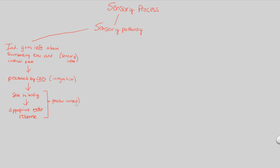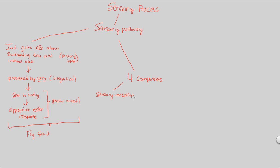This is a basic review of how a sensation occurs and what happens after. Take a look at figure 50.2 for a good visual understanding in the context of sensation and sensory organs. The pathway itself contains four major components. A sensation is going to begin with the first component: reception — specifically, sensory reception occurs via a sense organ. A sense organ could be your eyes, ears, tongue, or whatever it may be.